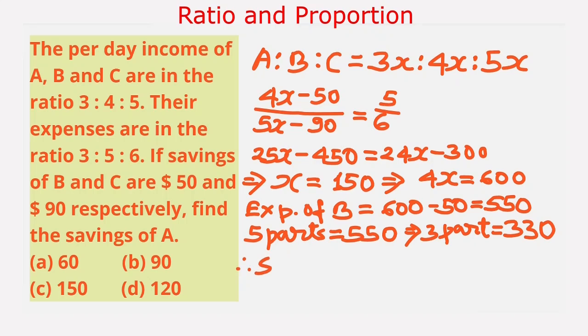Therefore, savings of A: Income of A is 3x and the value of x is 150. So income is 450 minus expenses of A, which is 330. This equals 120.